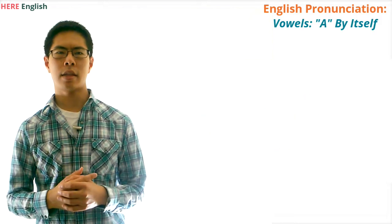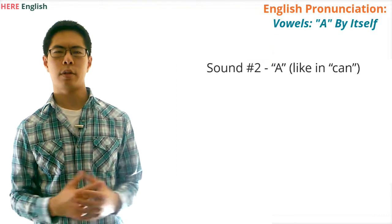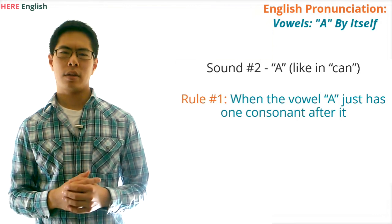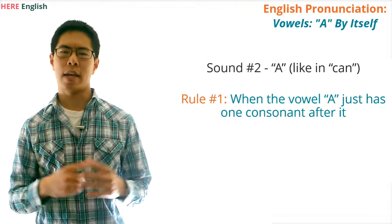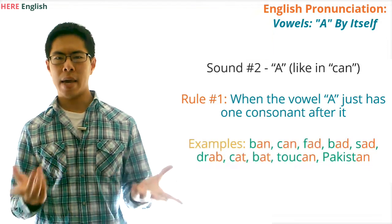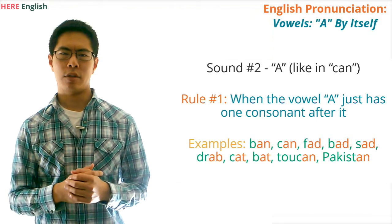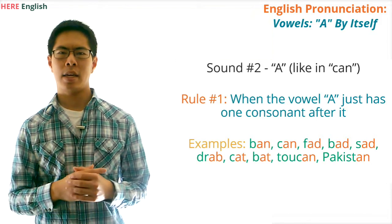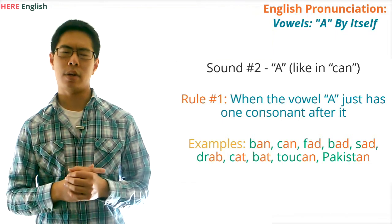Another sound that the vowel A can have in a word is A (short A). Here are three rules for when the vowel A will sound like A. Rule number one: usually, when the vowel A just has one consonant after it, it will have the sound A. Examples of words with this rule are ban, can, fad, bad, sad, drab, cat, bat, toucan, and Pakistan. As you can see, each of these words has an A that just has one consonant after it.